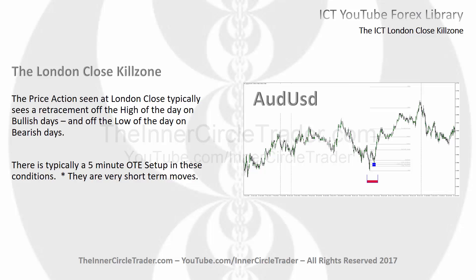You can see as an example here on the Aussie Dollar — we have the ICT London Close Kill Zone in here and the market creates the low of the day as you would expect, then it gives us an optimal trade entry long and trades higher. This gives us a rather easy 20 pips on this particular day. They won't always look like this, but it's important to see how the daily range is encapsulated. The highs and lows are generally formed between 10 o'clock and noon New York time.